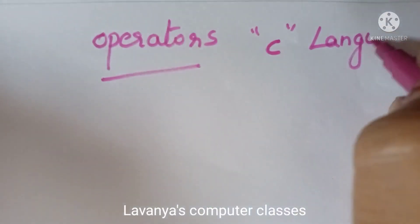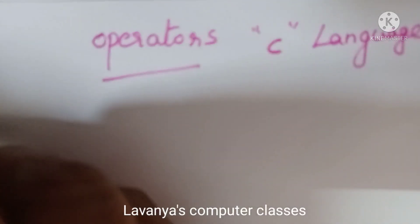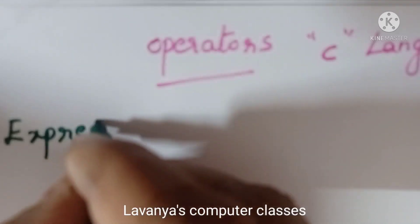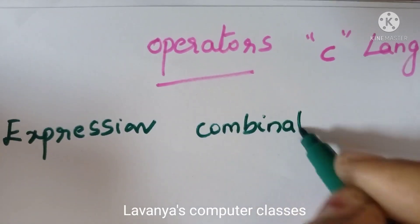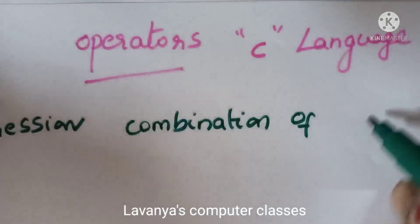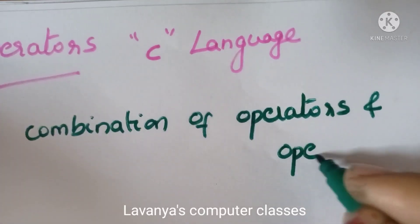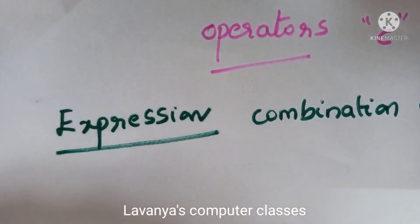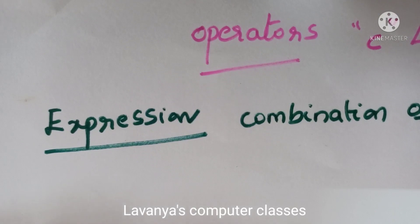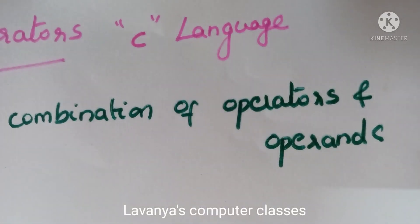First, we will go for what is an expression. An expression is the combination of operators and operands. In general mathematics we use the word equation, but in computer science we use the word expression. For example, A plus B is an expression, and 2 plus 3 is also an expression.